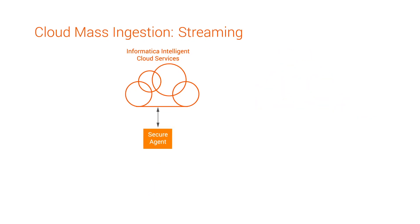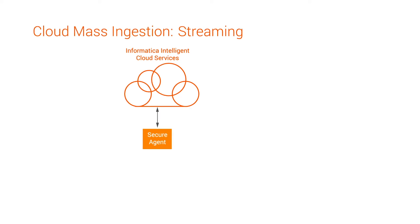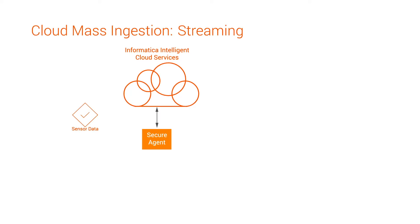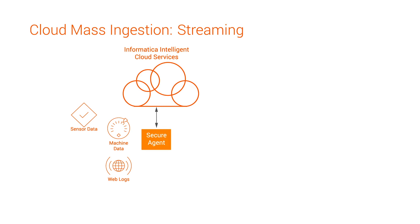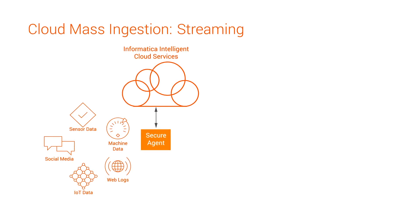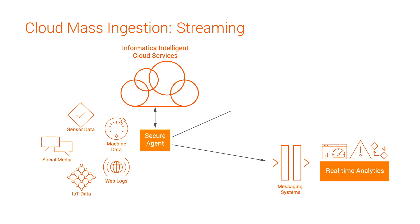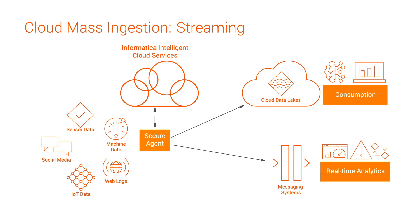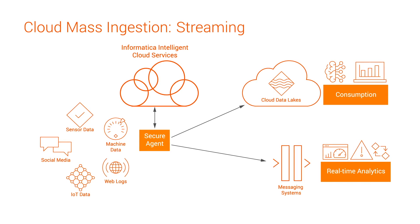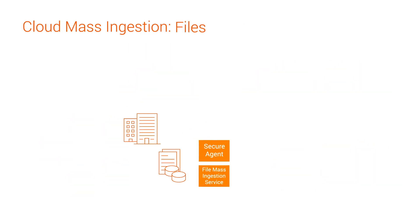With MassIngestion Streaming, you ingest data from sources like sensors, machines, logs, IoT devices, or clickstreams into messaging systems like Kafka for real-time analytics, or into a data lake for further consumption.